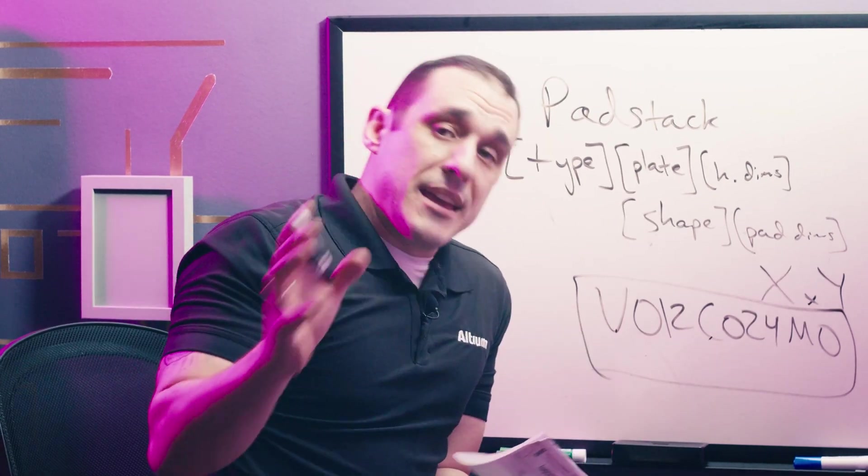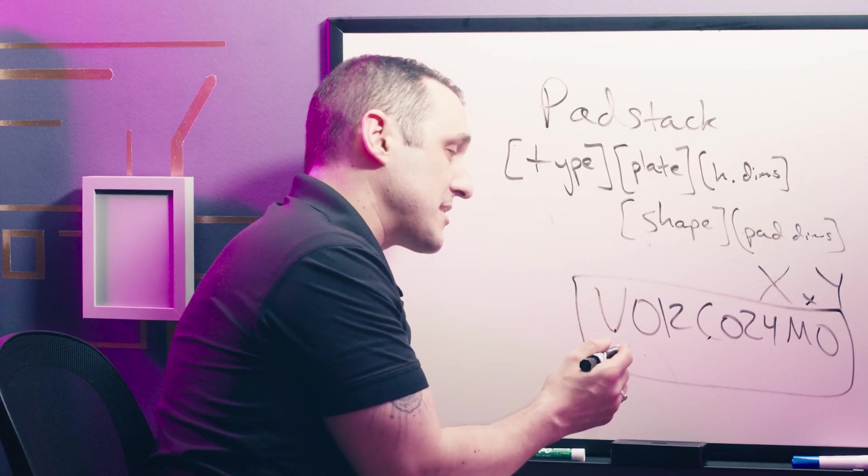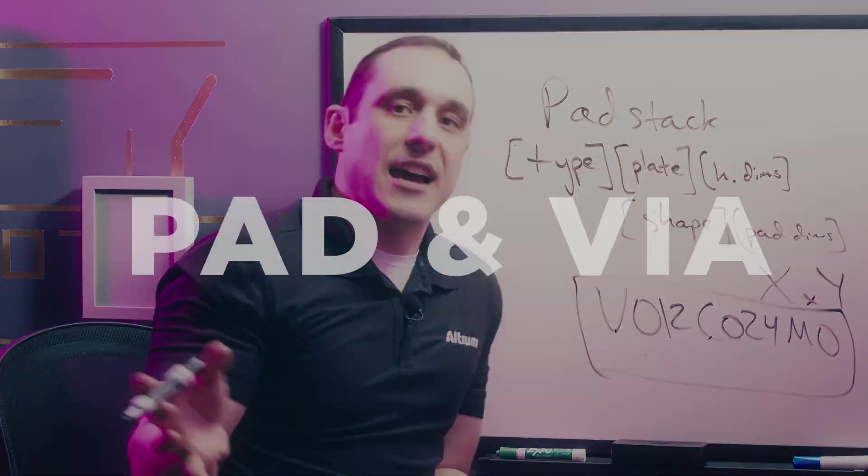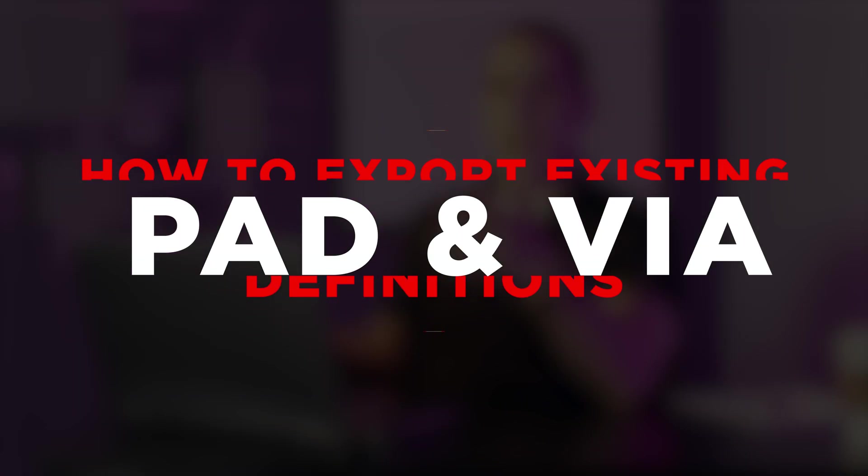Now I want to jump into Altium Designer and look at where you can access all of this information and how you can create and install libraries. We're going to look at an existing project and I'll show you how to export your existing pad and via definitions into a library that you can use in new projects. Of course you're not required to do this — if you start a brand new PCB from scratch you can define the pads and vias directly in the project and Altium Designer will set them up automatically.